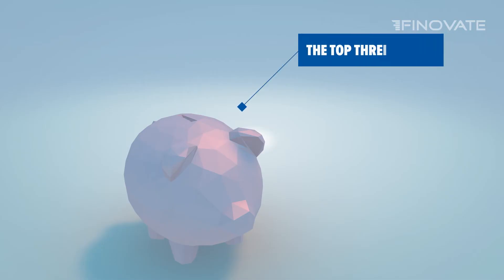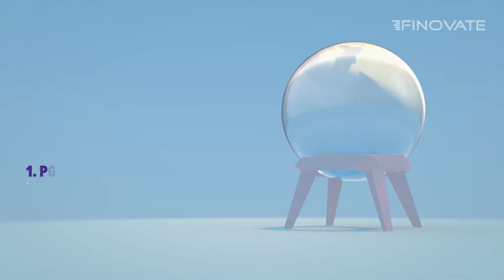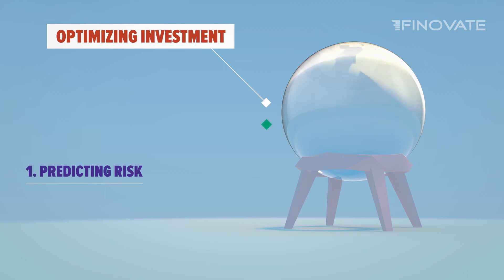The top three ways financial services companies can leverage the AI advantage are: one, predicting risk. This includes optimizing investment and tax strategies as well as proactively preventing fraud and bolstering security.